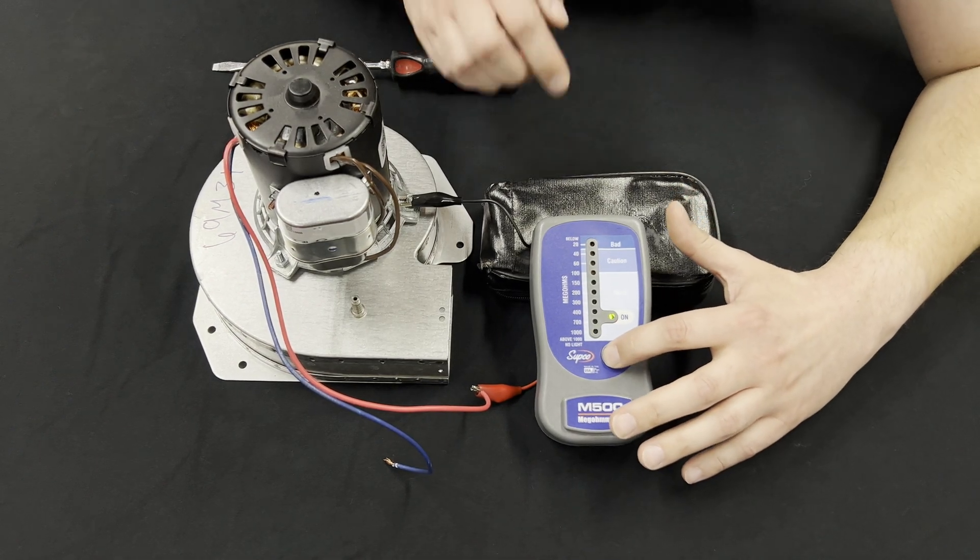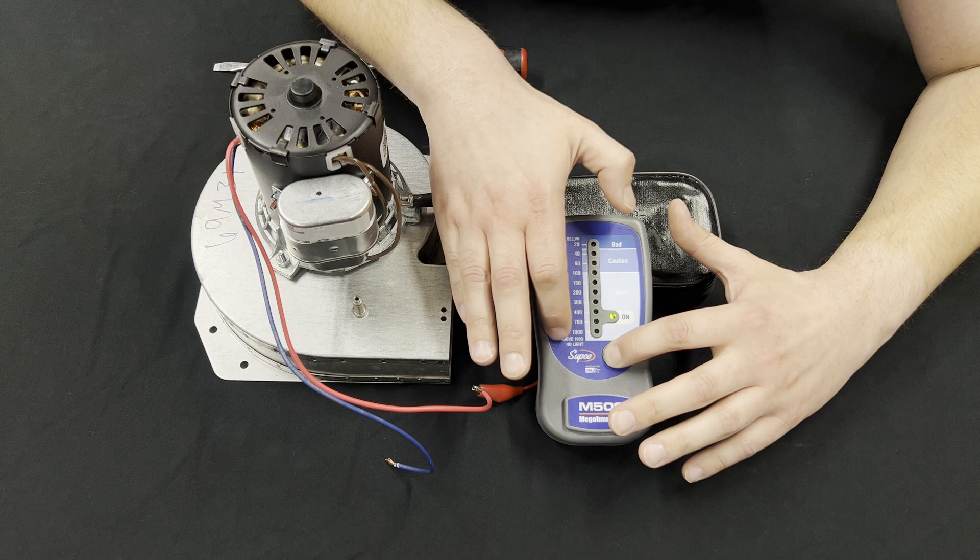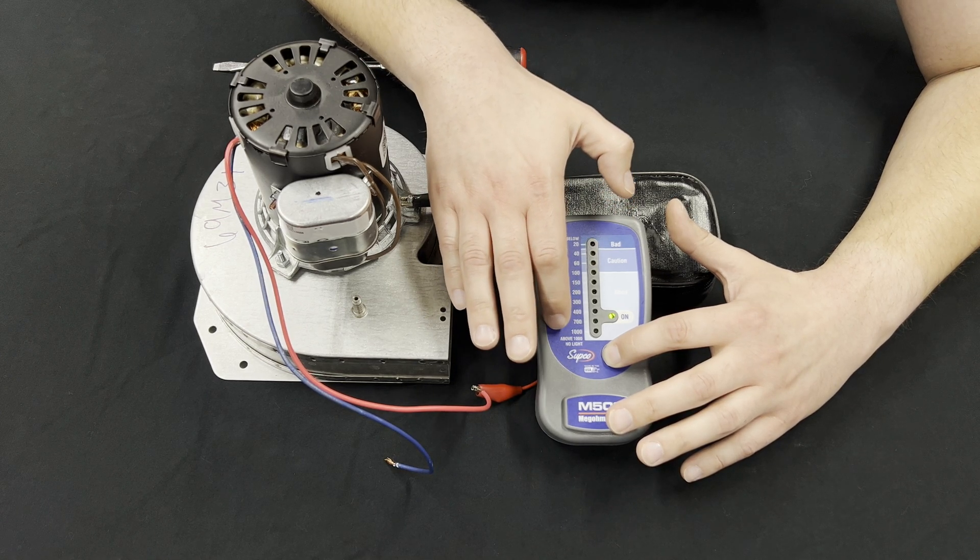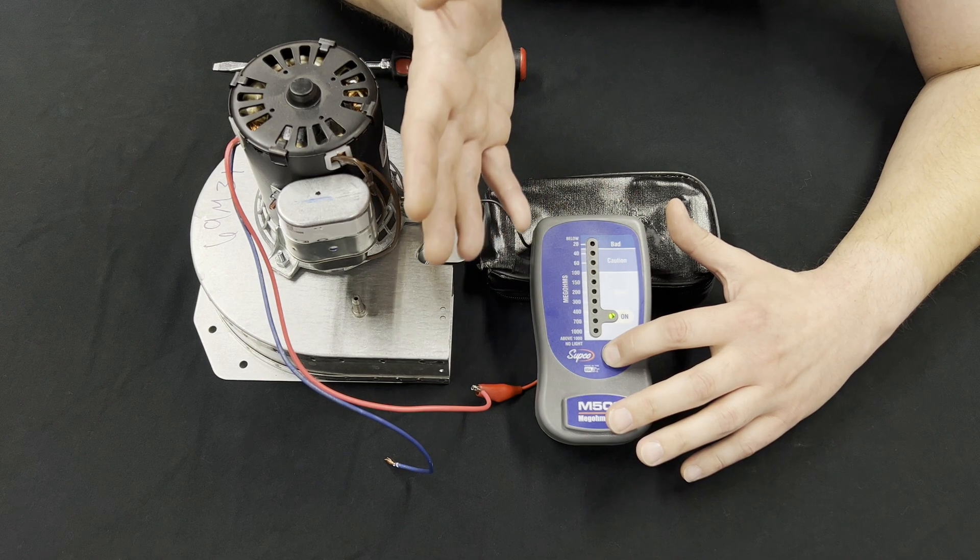By pressing the button on this, we'll see three quick green lights go from 400 up to a thousand. This indicates that the insulation is above a thousand mega ohms and is in great shape.